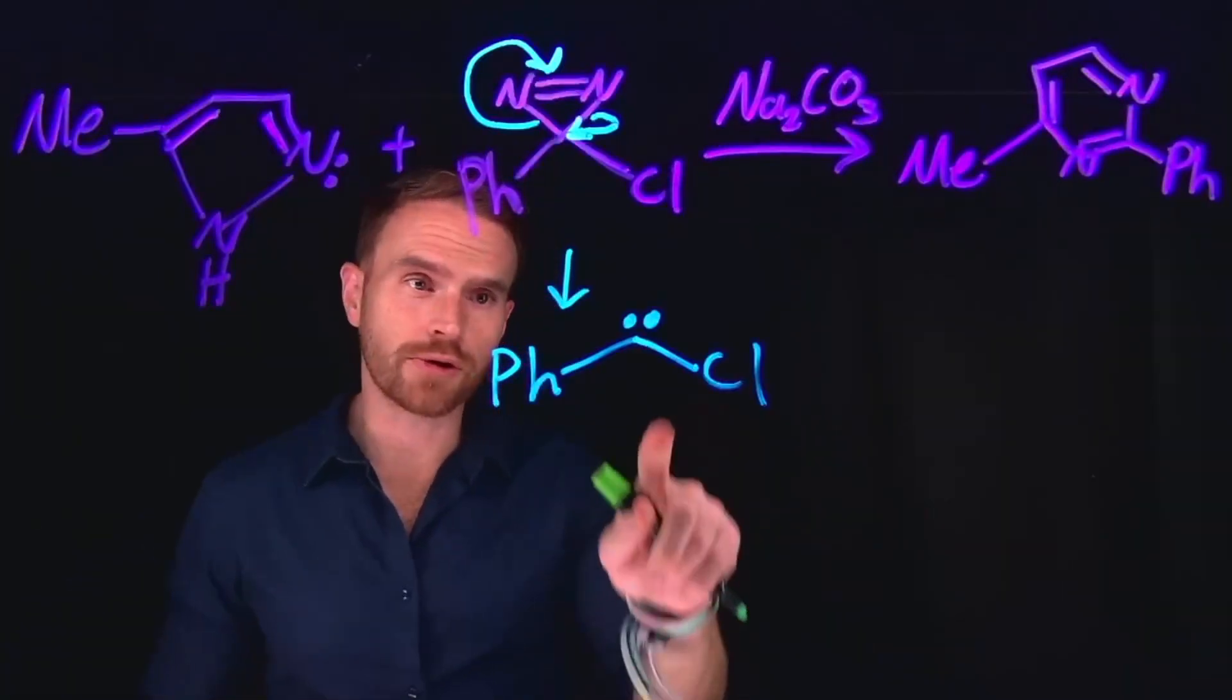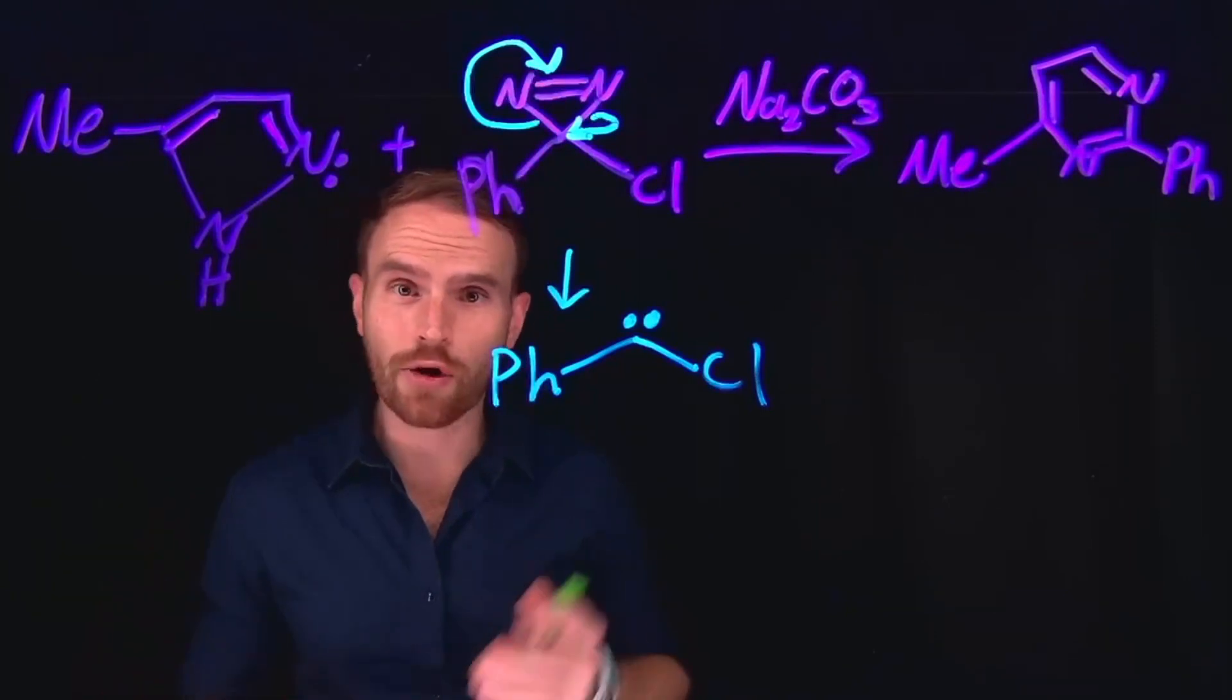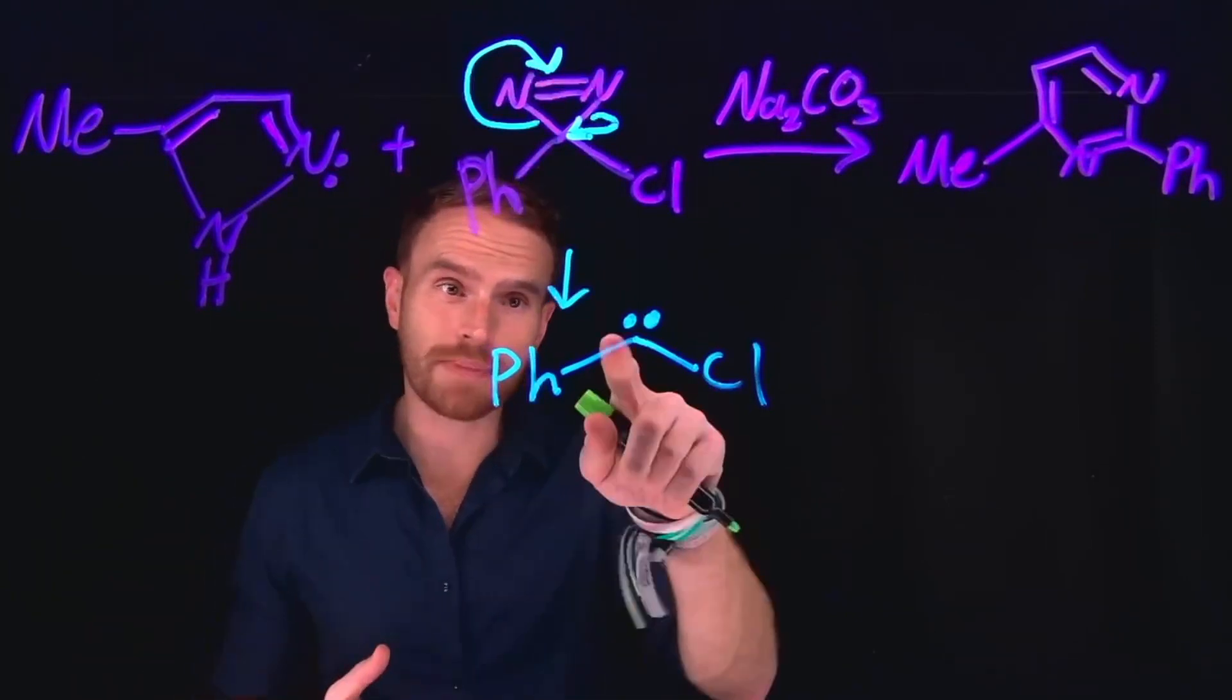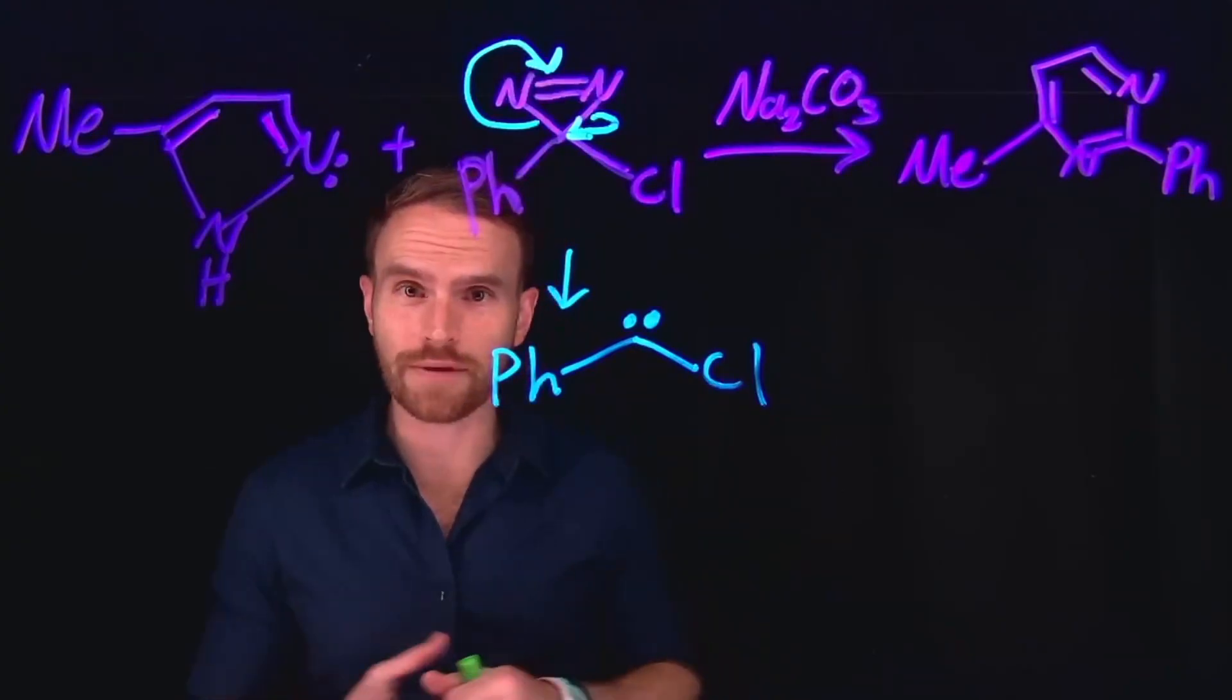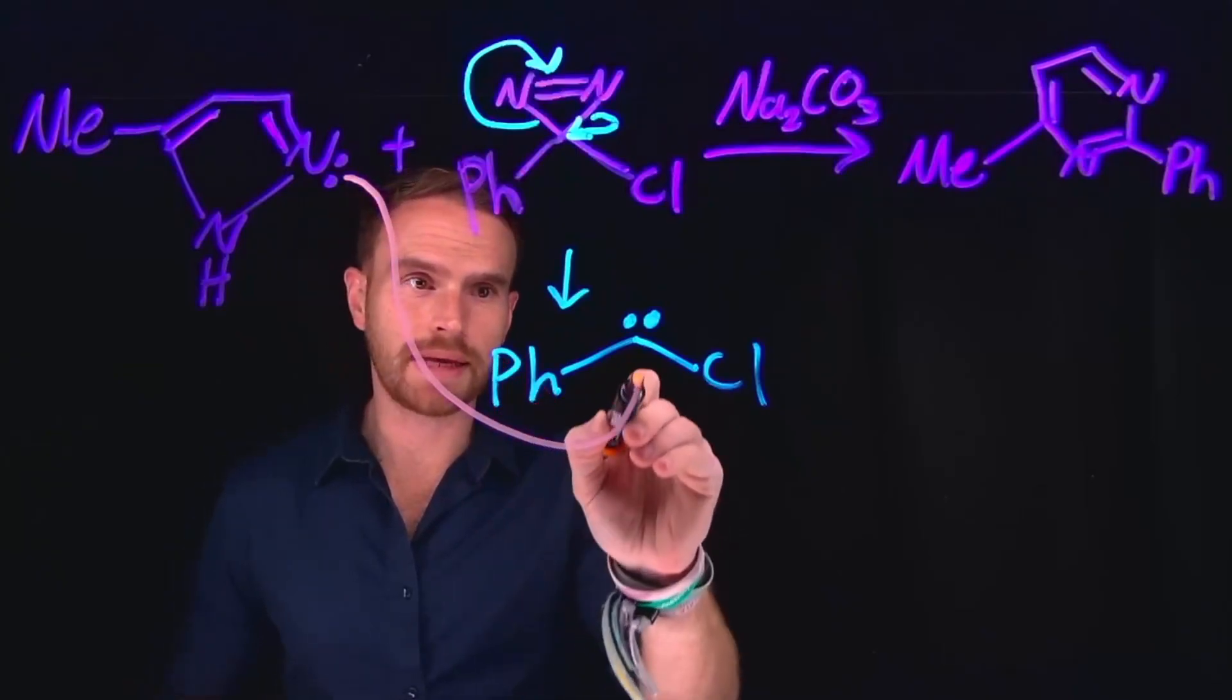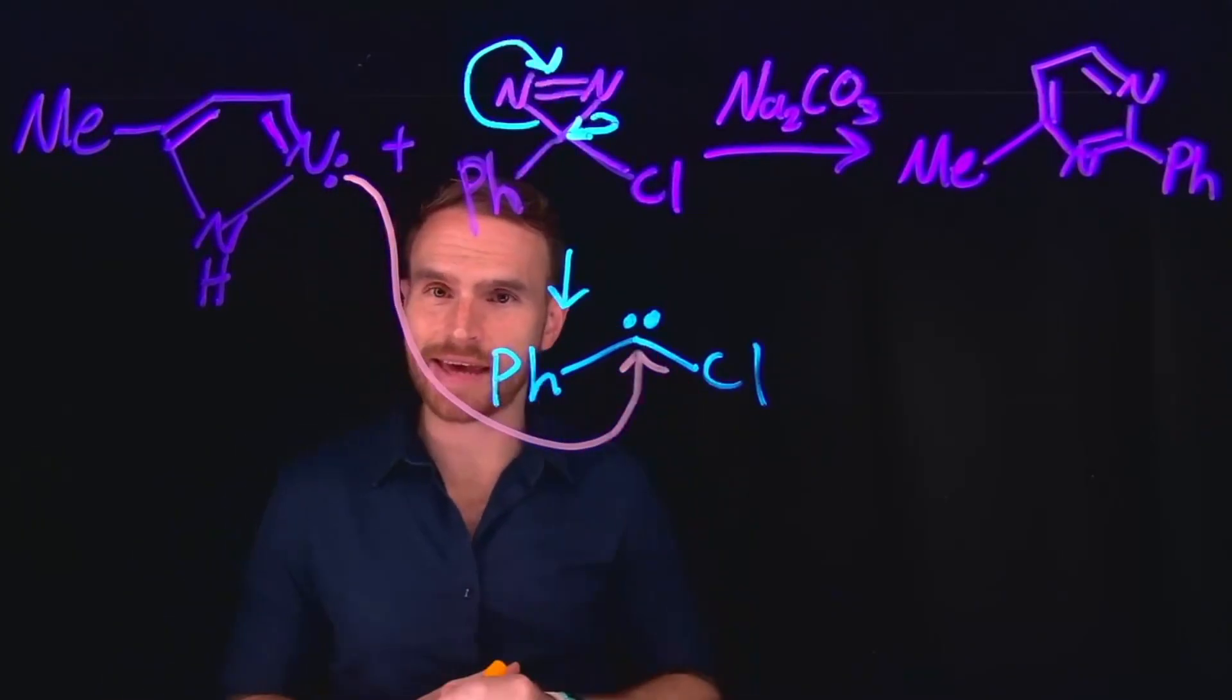Now, importantly for those unfamiliar, carbenes can act as two different types, either a Fischer carbene or a Schrock carbene. And depending on the type of carbene that's formed, these carbenes can either act as an electrophile or a nucleophile. In this case, in fact, it's acting as an electrophile, meaning that the nucleophilic nitrogen with this lone pair will come and attack that carbon position.